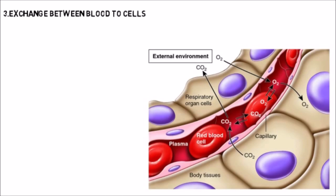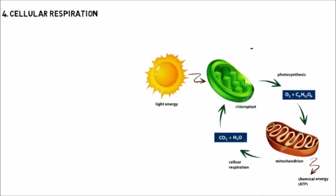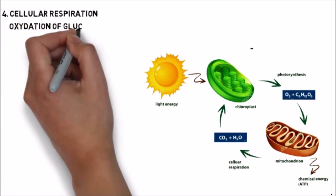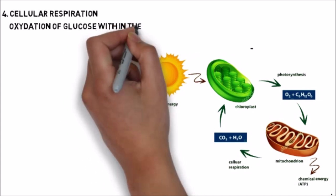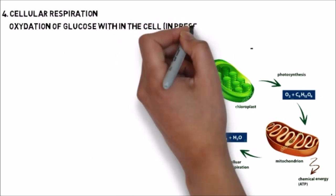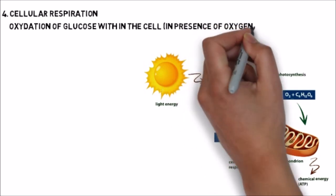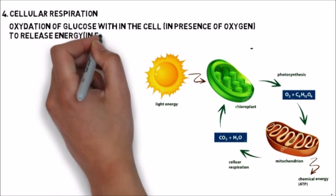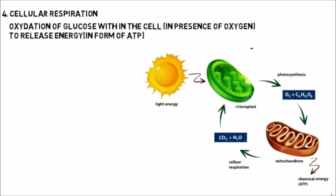In the third step, there is exchange between blood and cell. The blood carrying oxygen transfers that oxygen into the cell. Then in the fourth step — cellular respiration — after oxygen enters the cell, the glucose already present in the cell is oxidized in the presence of oxygen, breaking down and releasing energy which is trapped to form ATP.